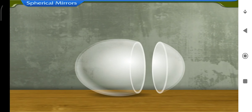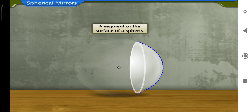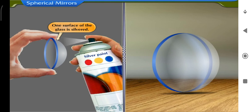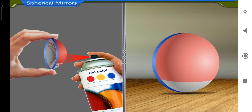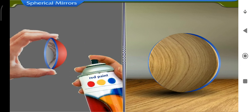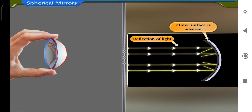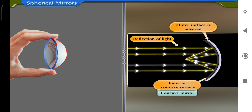A curved spherical mirror is actually a segment of the surface of a sphere. Its cross section is an arc of a circle. It is generally made up of glass. One surface of the glass is silvered so that reflection takes place from the other surface. The mirror in which the outer surface is silvered so that reflection of light takes place from the inner, or the concave surface, is called a concave mirror.